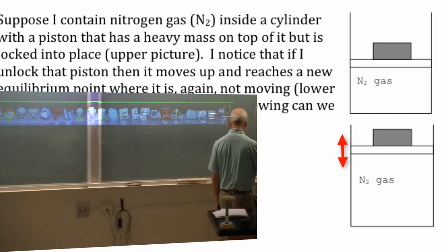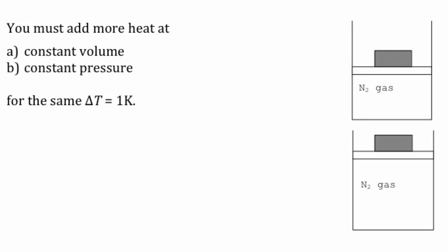So my clicker question for you: do you add more heat at constant V or constant P for same delta T? Do you add more heat at constant pressure? Constant pressure is like this one. You add heat and the piston rises.